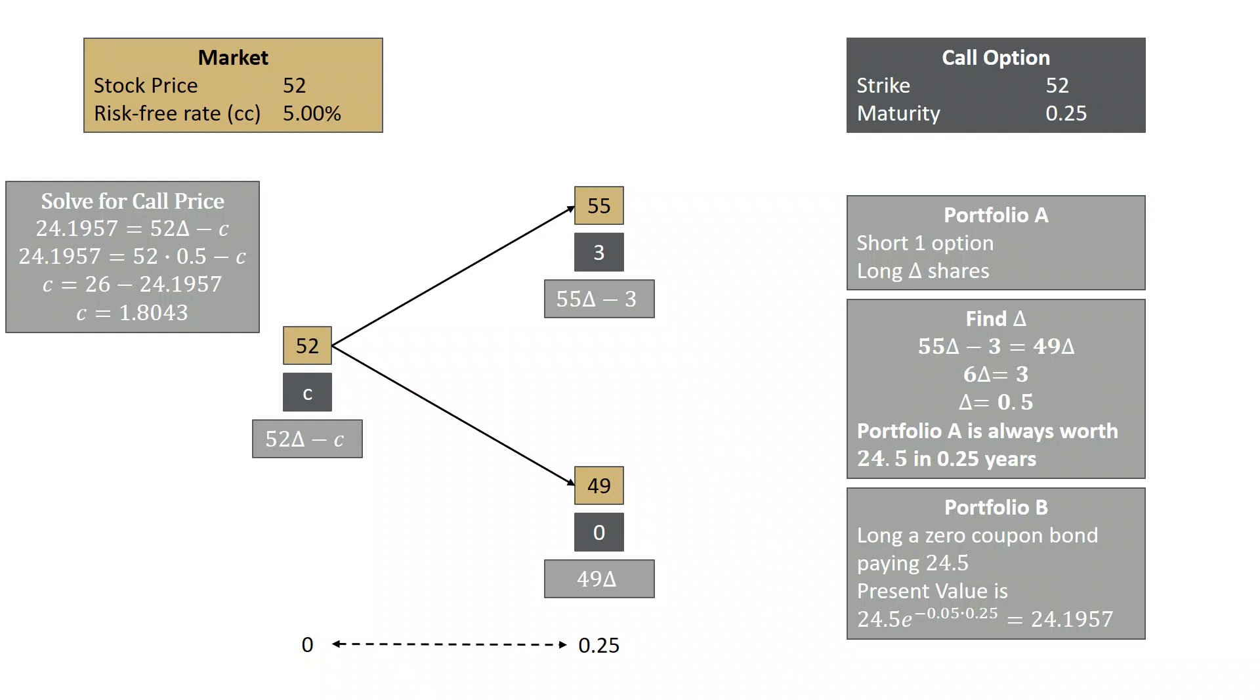We created a portfolio which was short an option and long delta shares. We found a delta such that our portfolio was indifferent to whether the stock ended up at 55 or 49. That delta was a half. We found the portfolio was always worth 24.5 in 0.25 years.